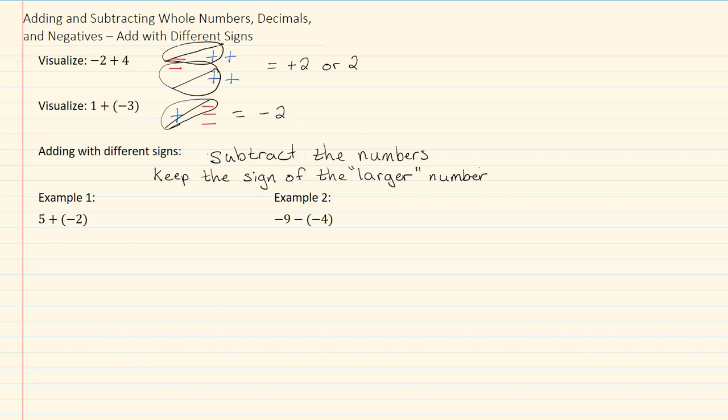So when we look at example one, the first thing I want to do would be to simplify this. This would be five minus two. We have opposite signs or different signs. So we're going to subtract five minus two, which would be three. Our five is positive, so our answer then would be positive three or just three.